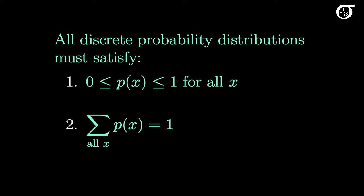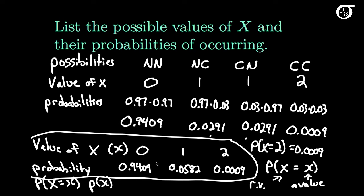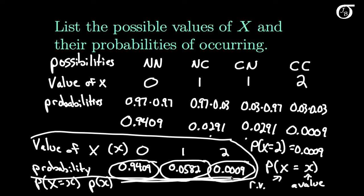We know that all discrete probability distributions must satisfy these conditions. Little p(x) represents a probability, and probabilities have to lie between 0 and 1, so p(x) is between 0 and 1 for all x. And since we are listing all possible values of X and their probabilities, if we sum up the probabilities of all possible values, we must get 1. The values of X themselves can be anything depending on the situation — negative, a billion, anything — but the probabilities must satisfy those conditions.